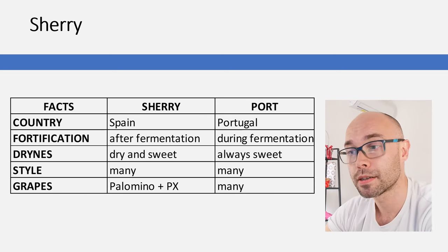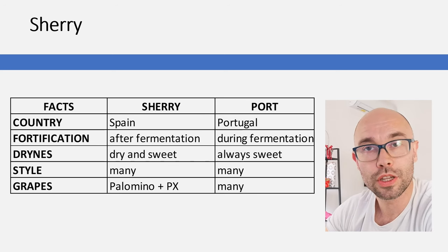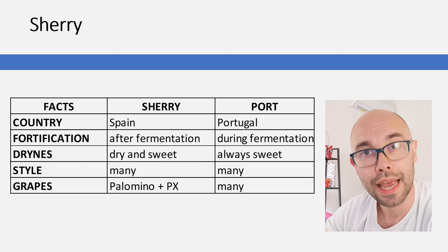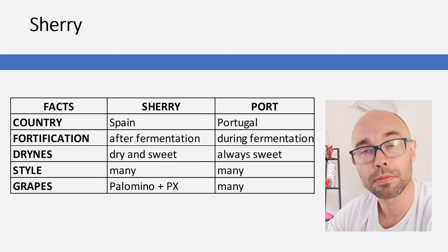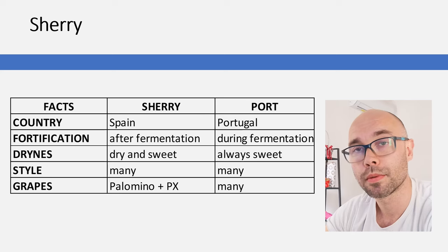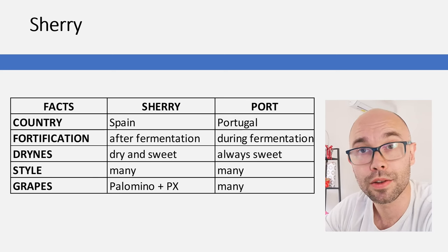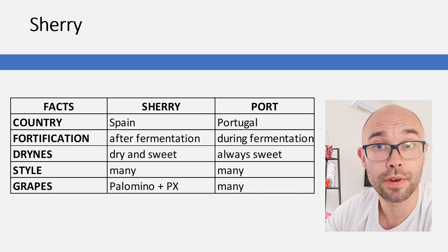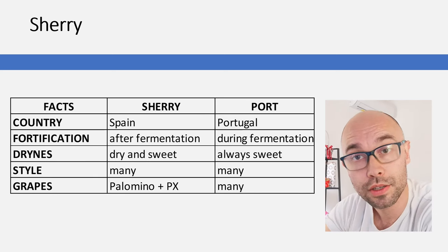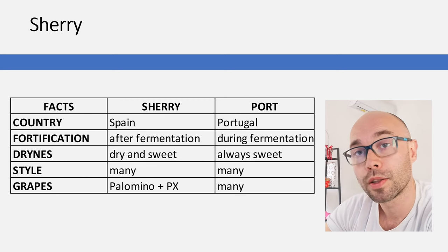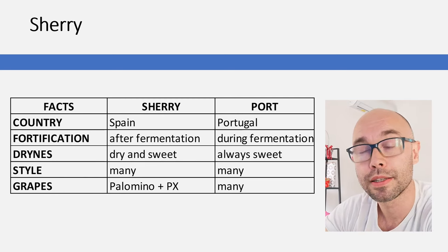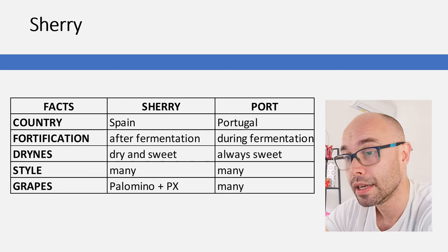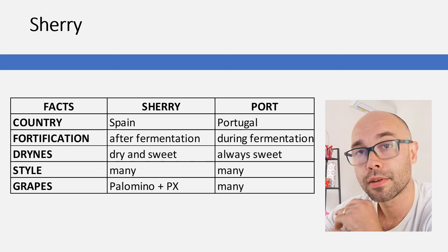One key thing to understand about fortified wines is what 'fortified' actually means — it means that additional alcohol is added to the wine. This process is called fortification. Historically, this fortification was done for protection purposes: wines were fortified in order to withstand long voyages during transportation. The winemaking process heavily influences the style of the fortified wine.